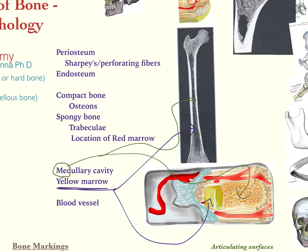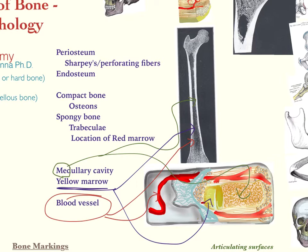A final component of these macrostructures is the blood vessels, and they enter through nutrient foramen. Remember, bone is a type of connective tissue that has vascularization — meaning the presence of blood vessels. Arteries bring fresh oxygenated blood, and veins take away all the waste and deoxygenated blood from the osteons, as we'll see a little bit later. So those are the macrostructures of bone.